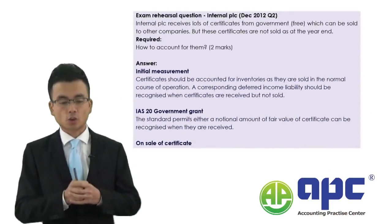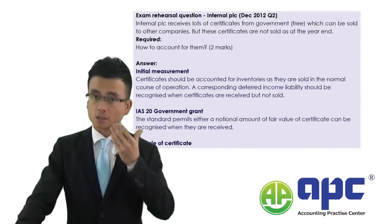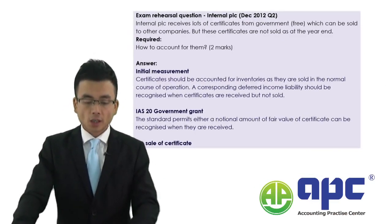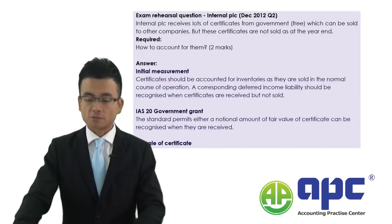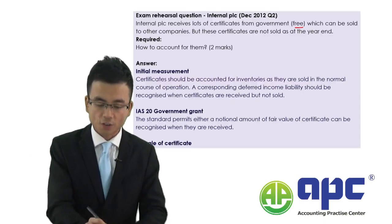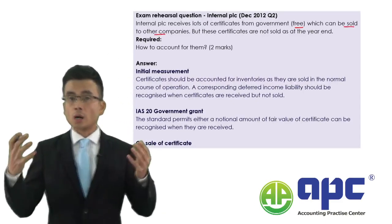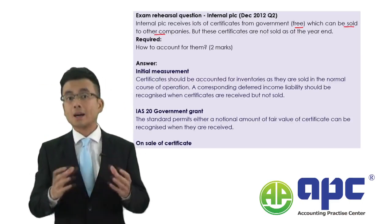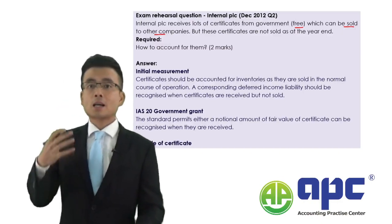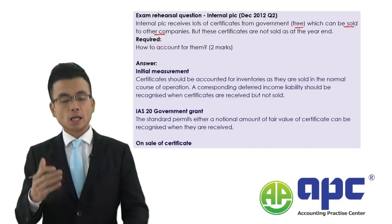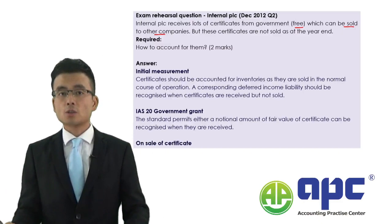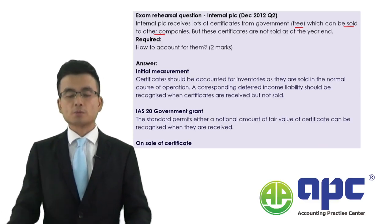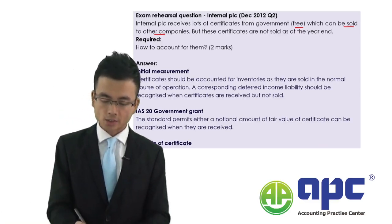Now let's look at another question — Internal PLC, also a two-mark question. Internal PLC receives lots of certificates from the government for free, which can be sold to other companies. We are gaining these certificates for resale purposes. According to the substance over form concept, and without any other clues about those certificates, we should account for them as inventories according to IAS No. 2.